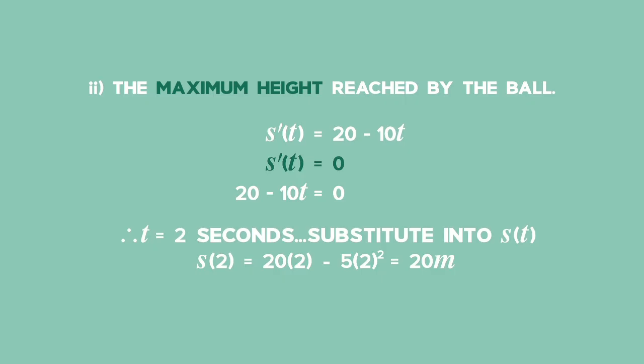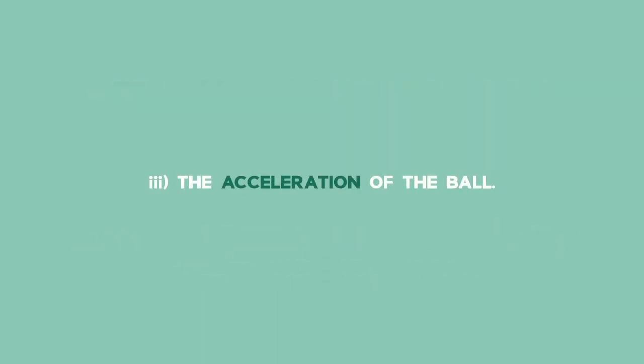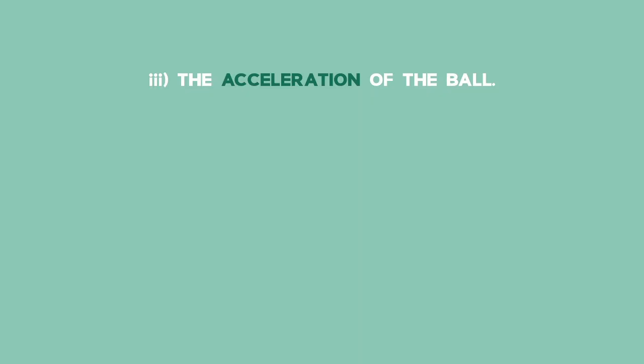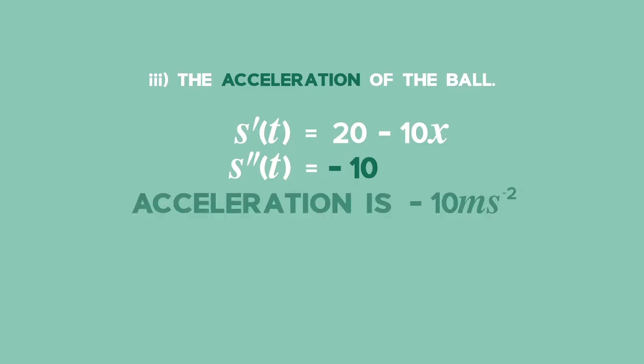So the ball takes 2 seconds to reach the maximum height of 20 meters. 3) To find the acceleration of the ball, find the second derivative. The second derivative equals negative 10. So the acceleration is negative 10 meters per square second.